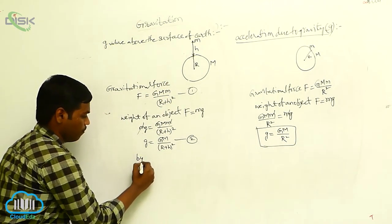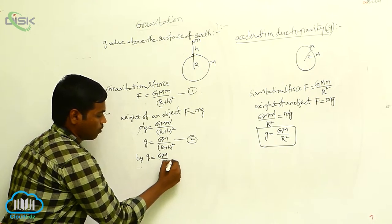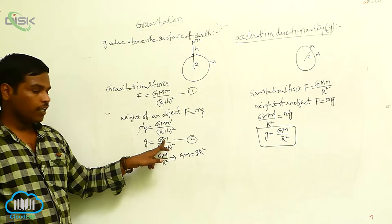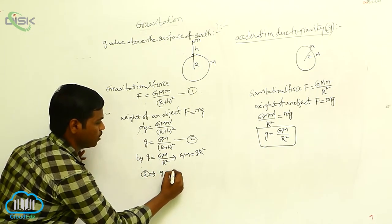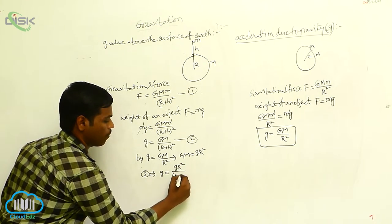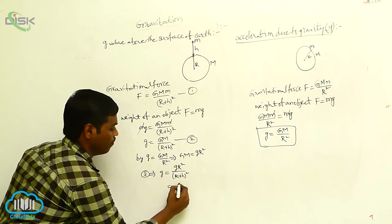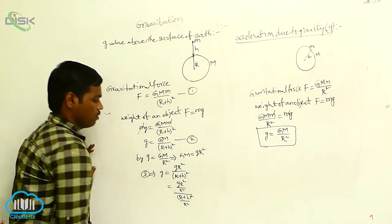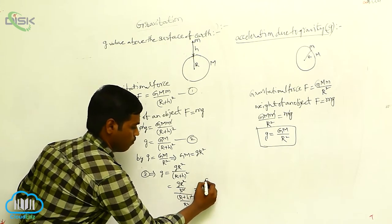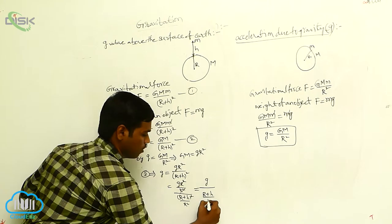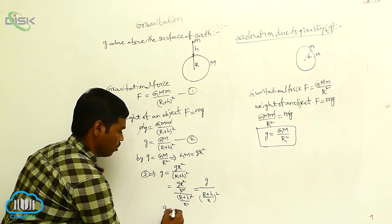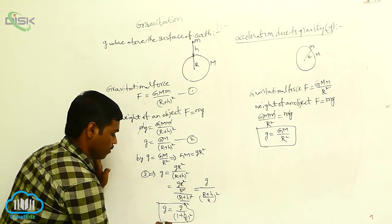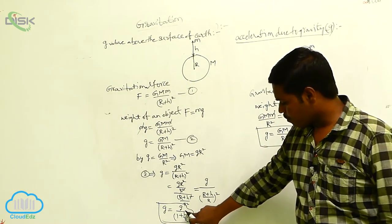By the relation g = GM/R² from the surface formula, we can write GM = gR². Substituting this into equation 2, the equation becomes g_h = gR²/(R+h)². Simplifying — dividing numerator and denominator by R² — we get g_h = g/(1+h/R)². By this equation, the acceleration due to gravity value changes with height.